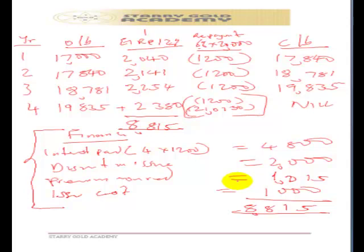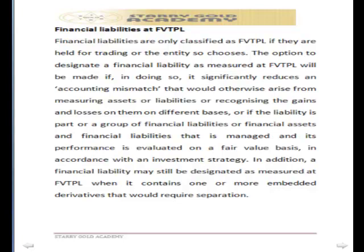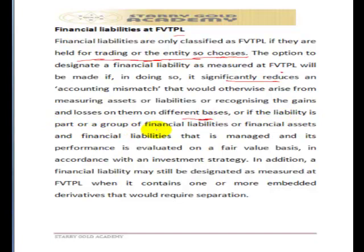Now let's discuss the second classification of financial liabilities: financial liability at fair value through profit or loss (FVTPL). Under amortized cost, we only classify financial liabilities that are not held for trading. Under FVTPL, only those held for trading are classified as such. A financial liability is also classified as FVTPL if the entity so chooses — provided doing so significantly reduces an accounting mismatch that would otherwise arise from measuring assets and liabilities on different bases.